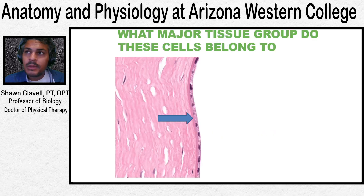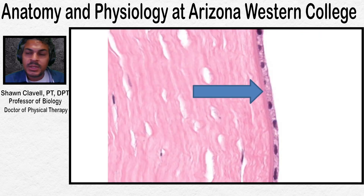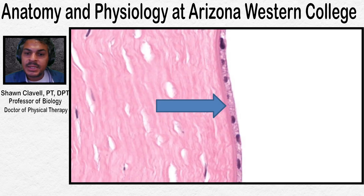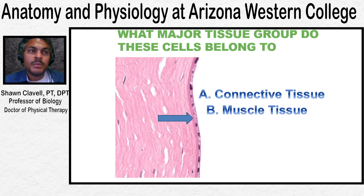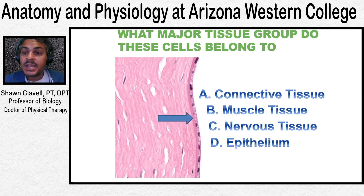Here we can see a few cells that are lined up with a flat shape — I'll zoom in for you. You can see there's an open space. Which one of those four groups does it belong to? Is it connective tissue, muscle tissue, nervous tissue, or epithelium? You can see there's an adjacent different type of tissue on the opposite side. So what type of tissue is that?